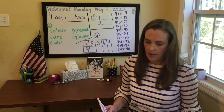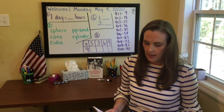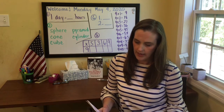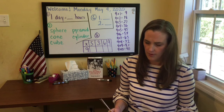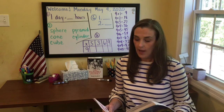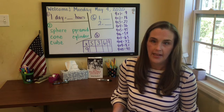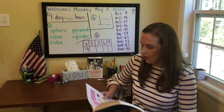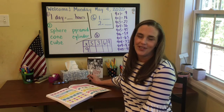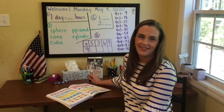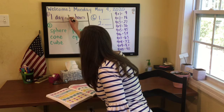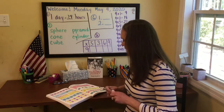At the very top of this lesson are the pink boxes and it says write the numbers, and then it has one day equals blank hours, one week equals blank days. How many hours are in a day? If you said 24 you're exactly right. I'll go ahead and write that on the board as an example. One day equals 24 hours.